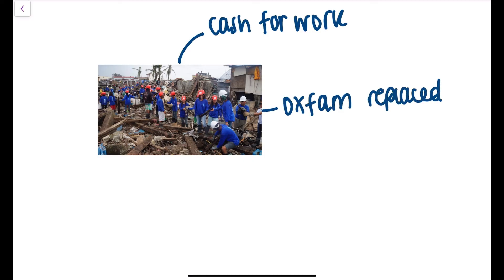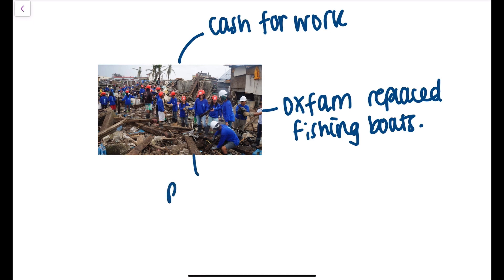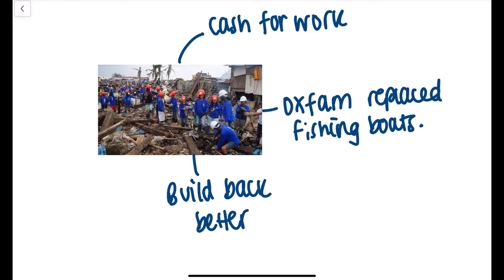Oxfam, the charity and NGO, replaced the fishing boats. As mentioned earlier, fishing is the main source of income for the majority of people in the Philippines, so by replacing their fishing boats, they were able to get back out and earn money. There was also the Build Back Better programme, aimed at upgrading damaged buildings to protect them from future storms.